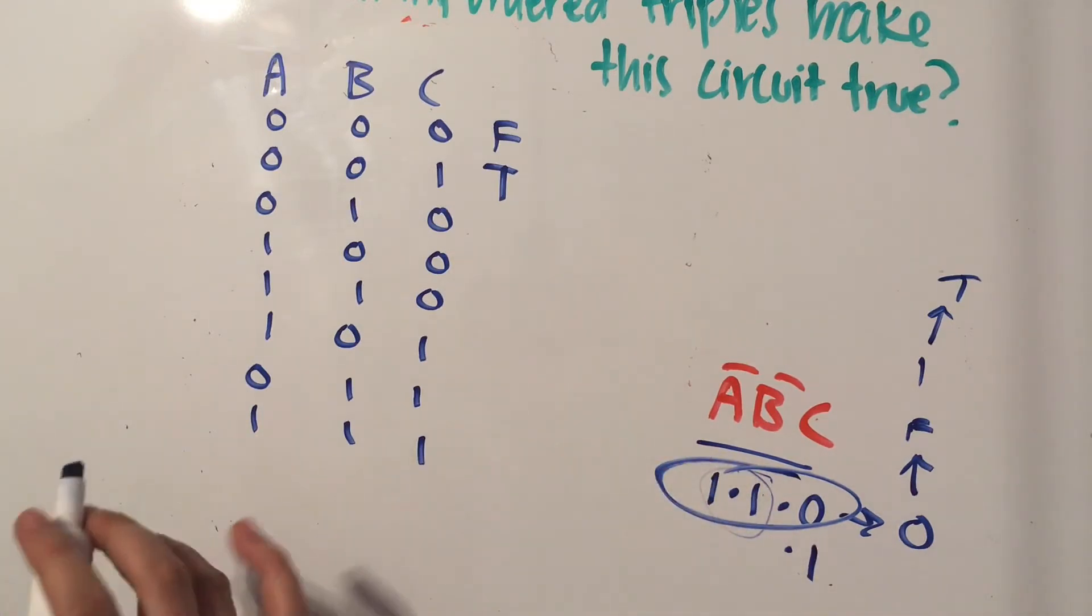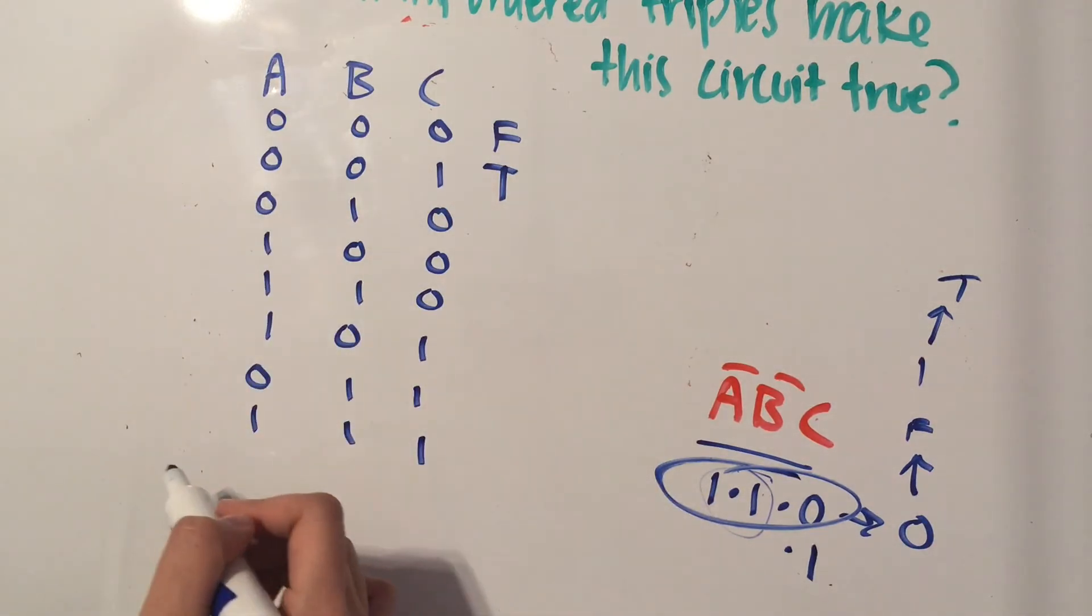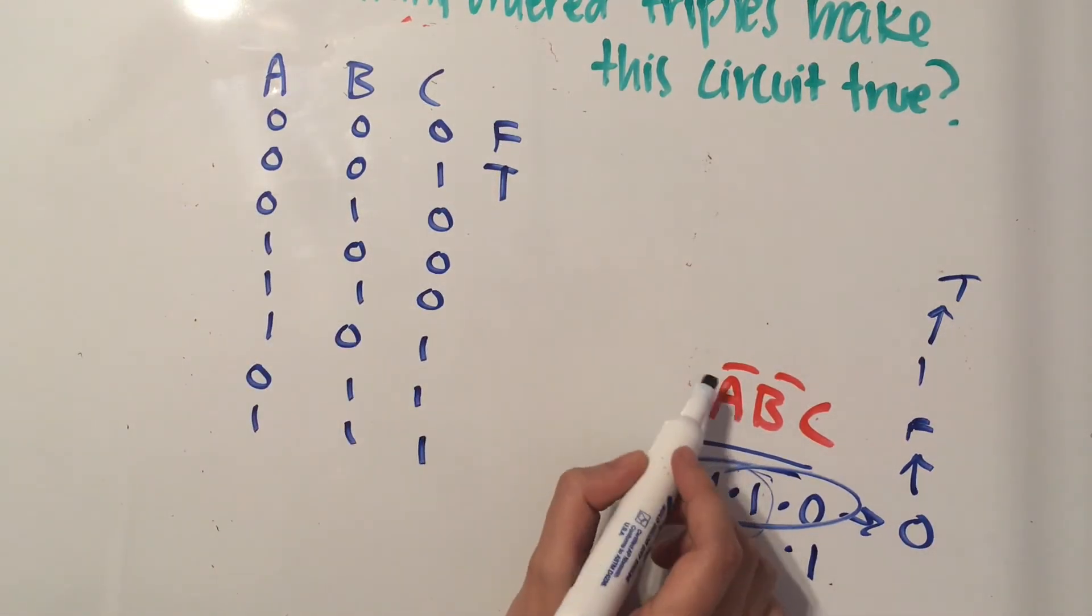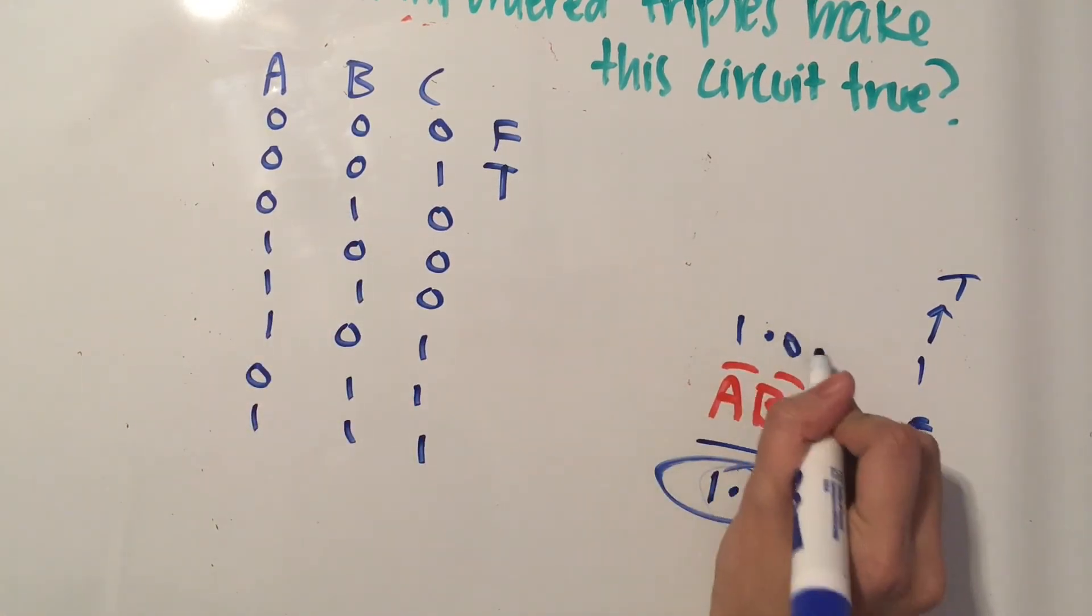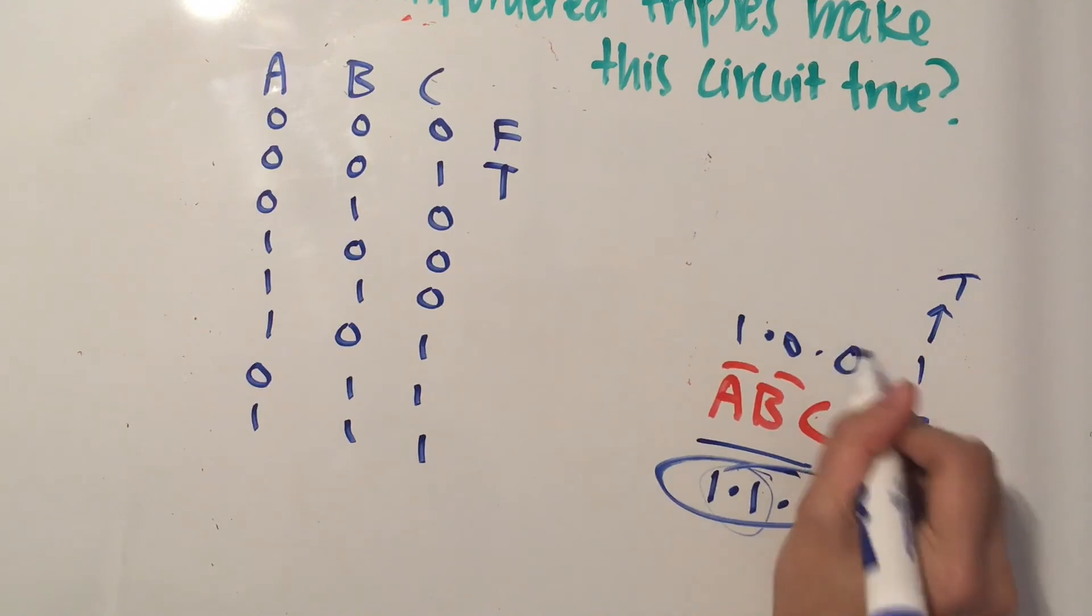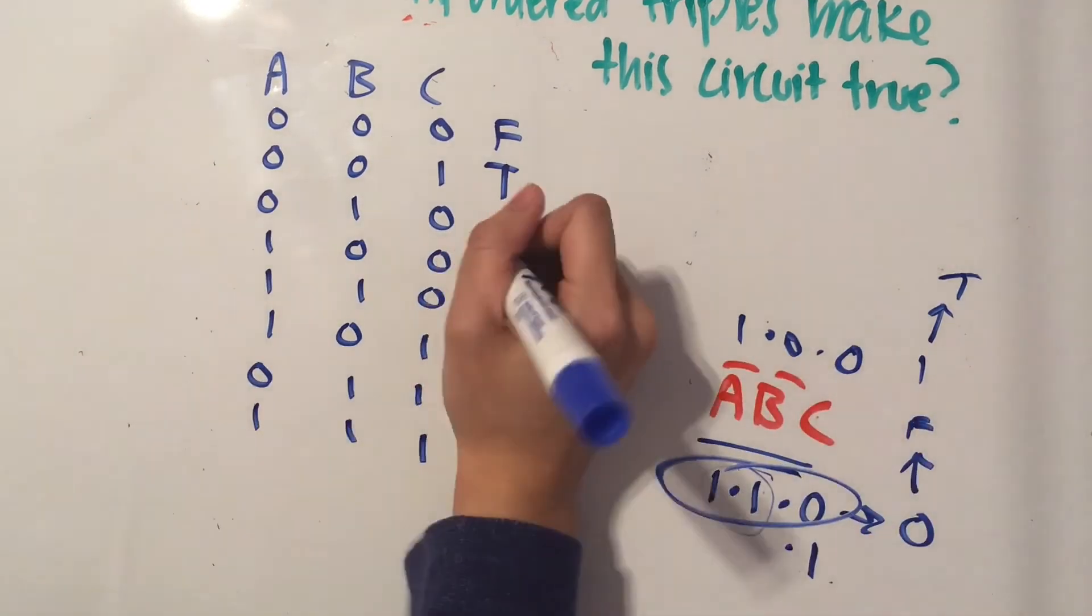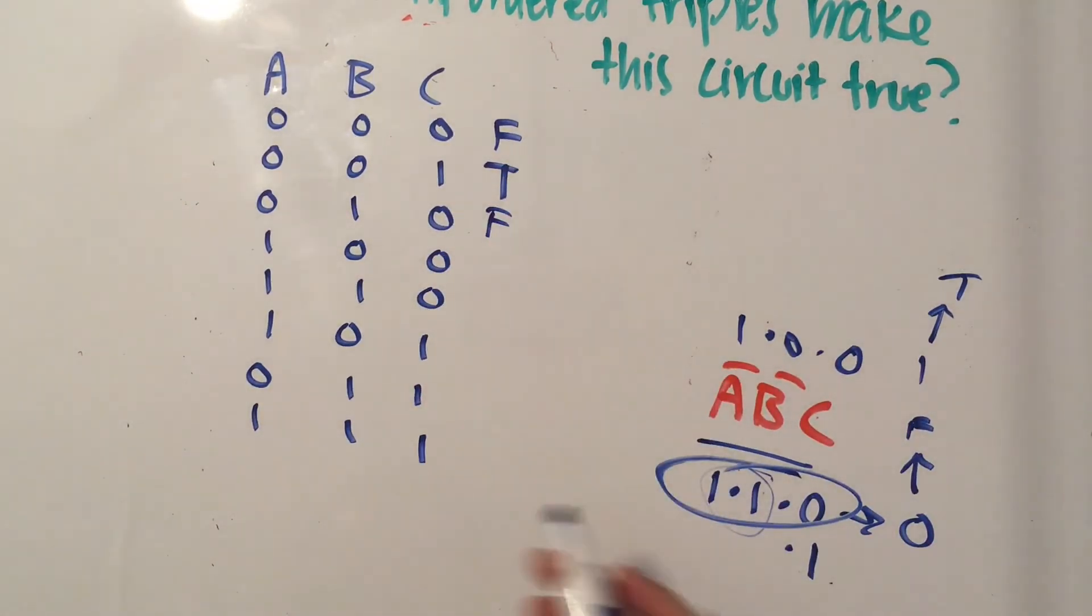But just in case, to make sure, let's just go through each one of them, each of the rest of them. So NOT A is going to be one, NOT B is going to be zero, and we're multiplying by C, which is zero, which is going to be false.